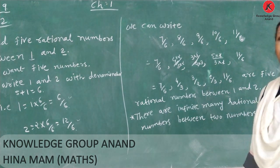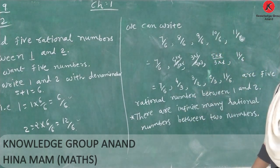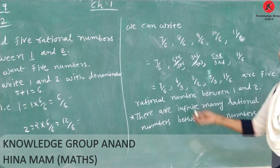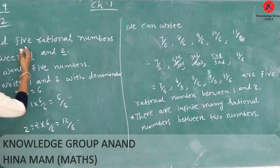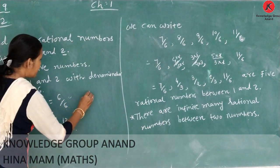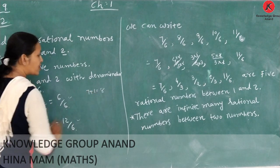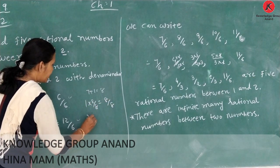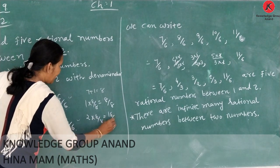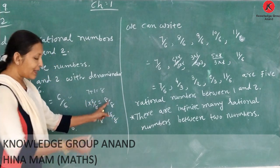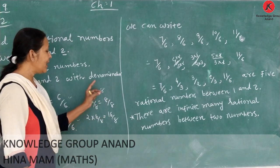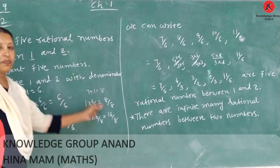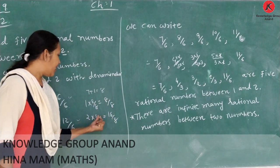From this question, we learn that there are infinitely many rational numbers between any 2 numbers. Here we wanted 5 numbers. Suppose we want 7 numbers — then we take the denominator as 7 plus 1 equals 8. Therefore, 1 equals 8 over 8 and 2 equals 16 over 8. Between them: 9 by 8, 10 by 8, 11 by 8, 12 by 8, 13 by 8, 14 by 8, 15 by 8 — that gives 7 numbers between 1 and 2.